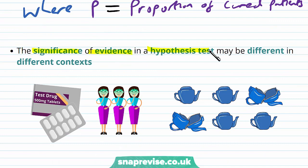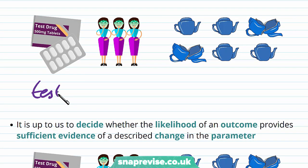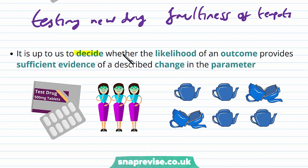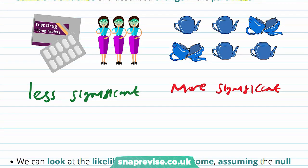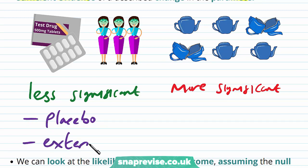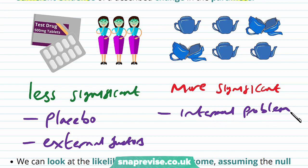The significance of evidence in a hypothesis test may be different in different contexts — such as the testing of a new drug or the faultiness of teapots, for example. It is up to us to decide whether the likelihood of an outcome provides sufficient evidence of a described change in the parameter. We can use a hypothesis test to show that evidence is less significant or more significant. In the case of a drug, less significant could correspond to the drug being a placebo or other external factors, but if it is more significant then this could be an internal problem — in the case of the teapots, perhaps the quality of the manufacture or teapot material.